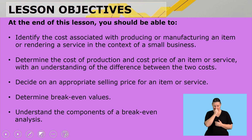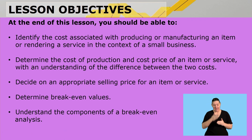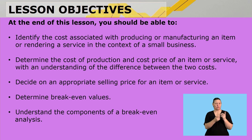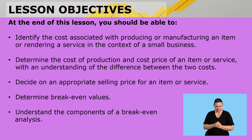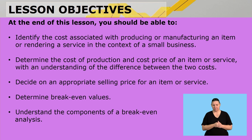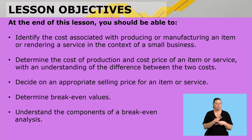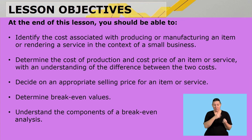What are our lesson objectives for today? At the end of this lesson you should be able to: number one, identify the costs associated with producing or manufacturing an item or rendering a service in the context of a small business. Number two, determine the cost of production and cost price of an item or service, with understanding of the difference between the two costs.